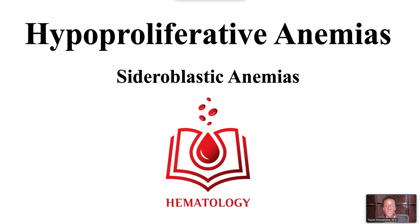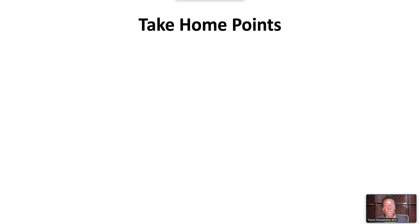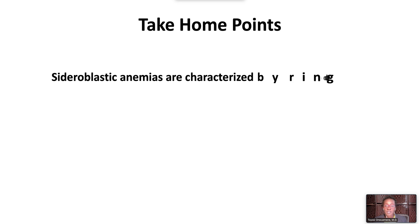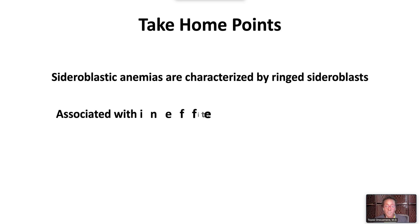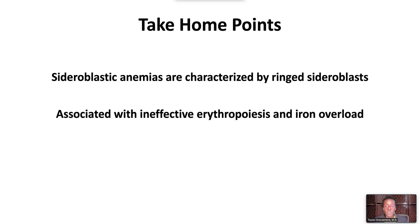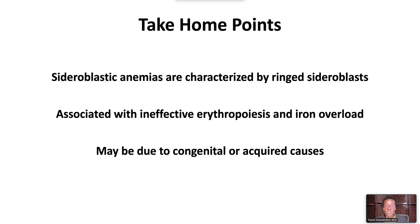Welcome to hyperproliferative anemias, sideroblastic anemias. We have the following take-home points. Sideroblastic anemias are characterized by ring sideroblasts in the bone marrow aspirate. Sideroblastic anemias are associated with ineffective erythropoiesis and iron overload. Sideroblastic anemias may be due to congenital or acquired causes.